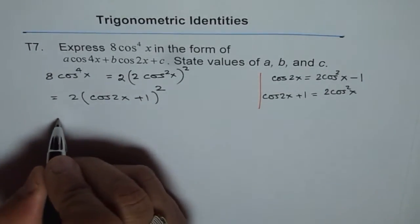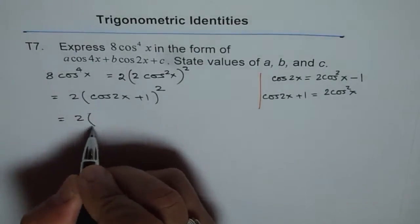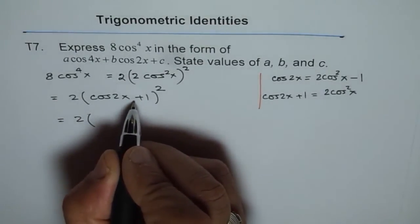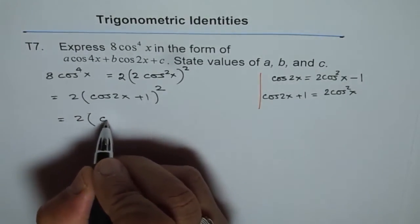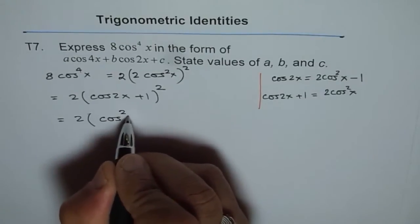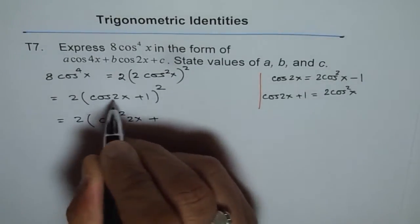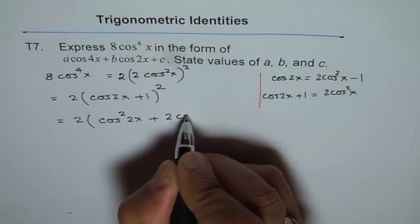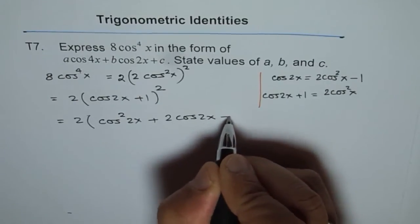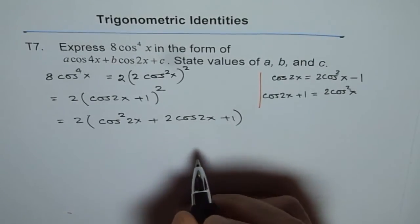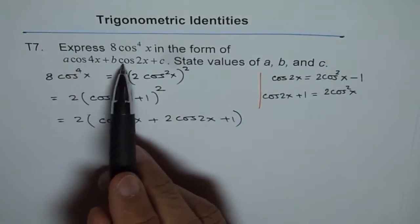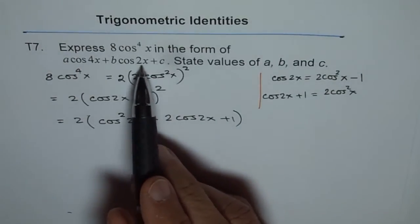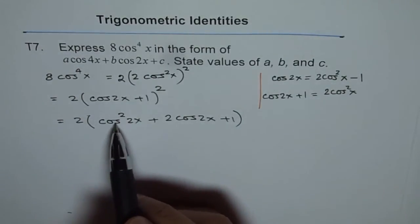Now we can expand this. If we do that, we get a square plus 2ab plus b square. So a square is cos square 2x plus 2 times cos 2x plus 1. So we have a form which is quite similar to this. We have at least got the last two terms, but here we have cos 2x.